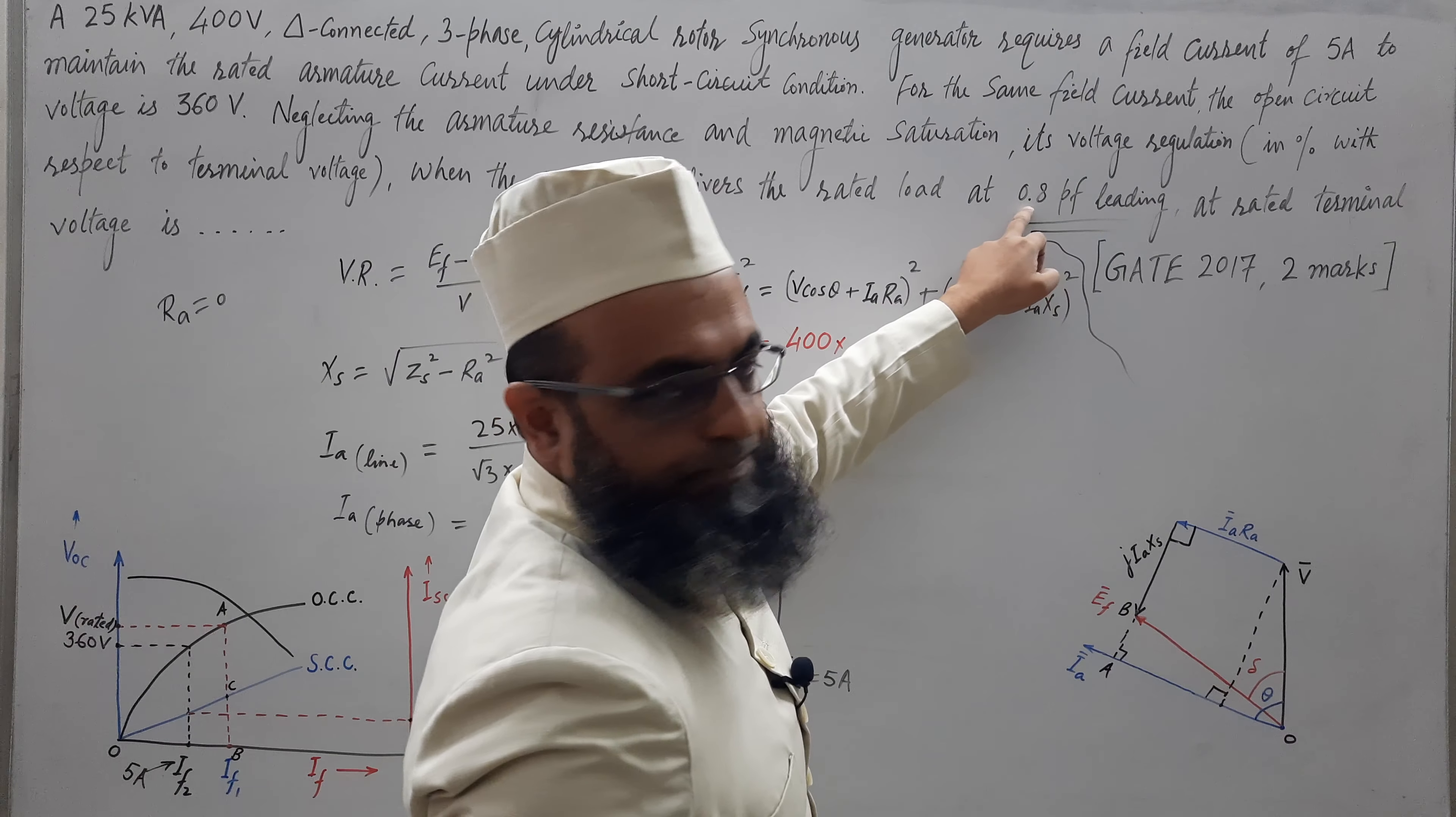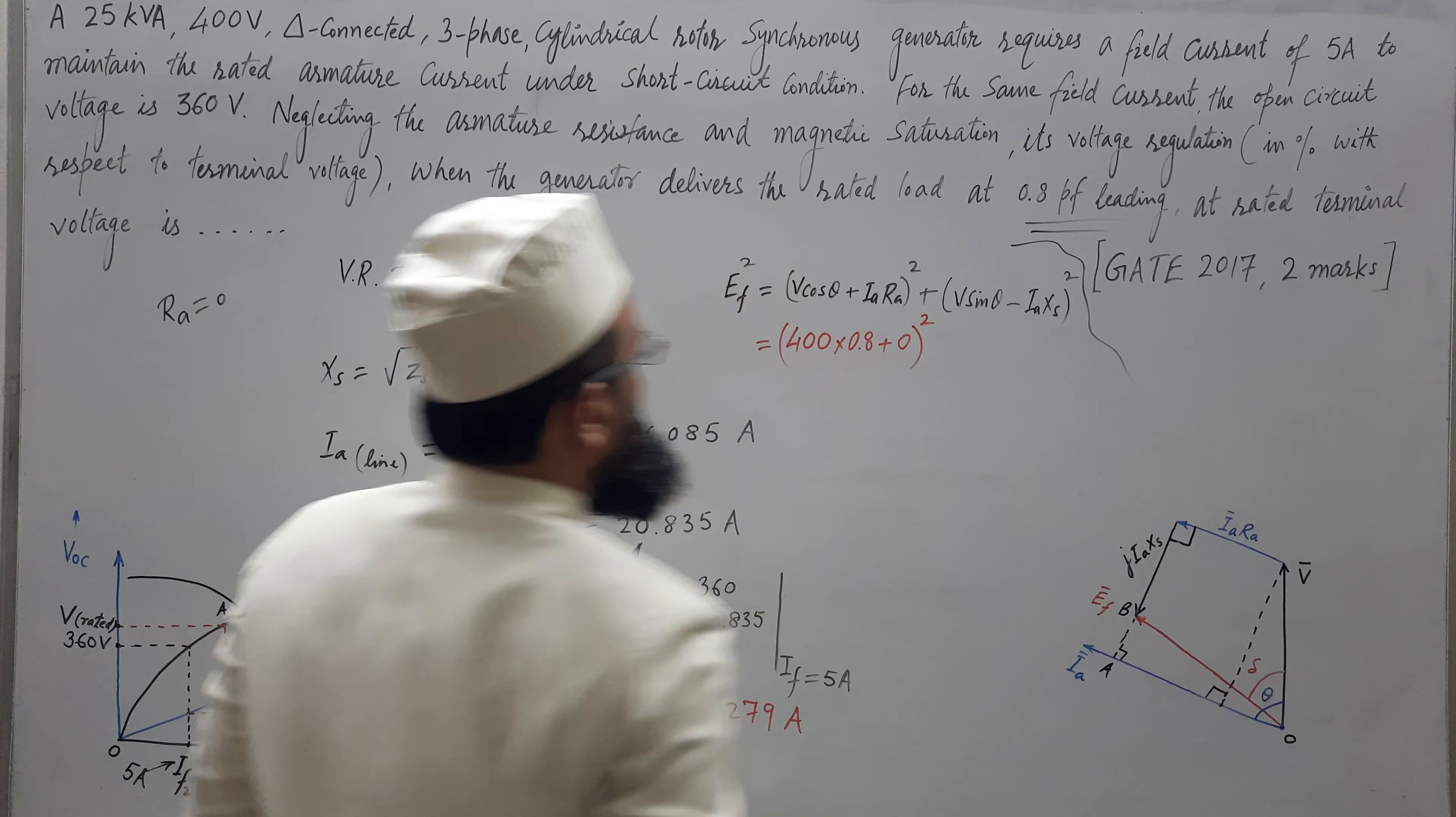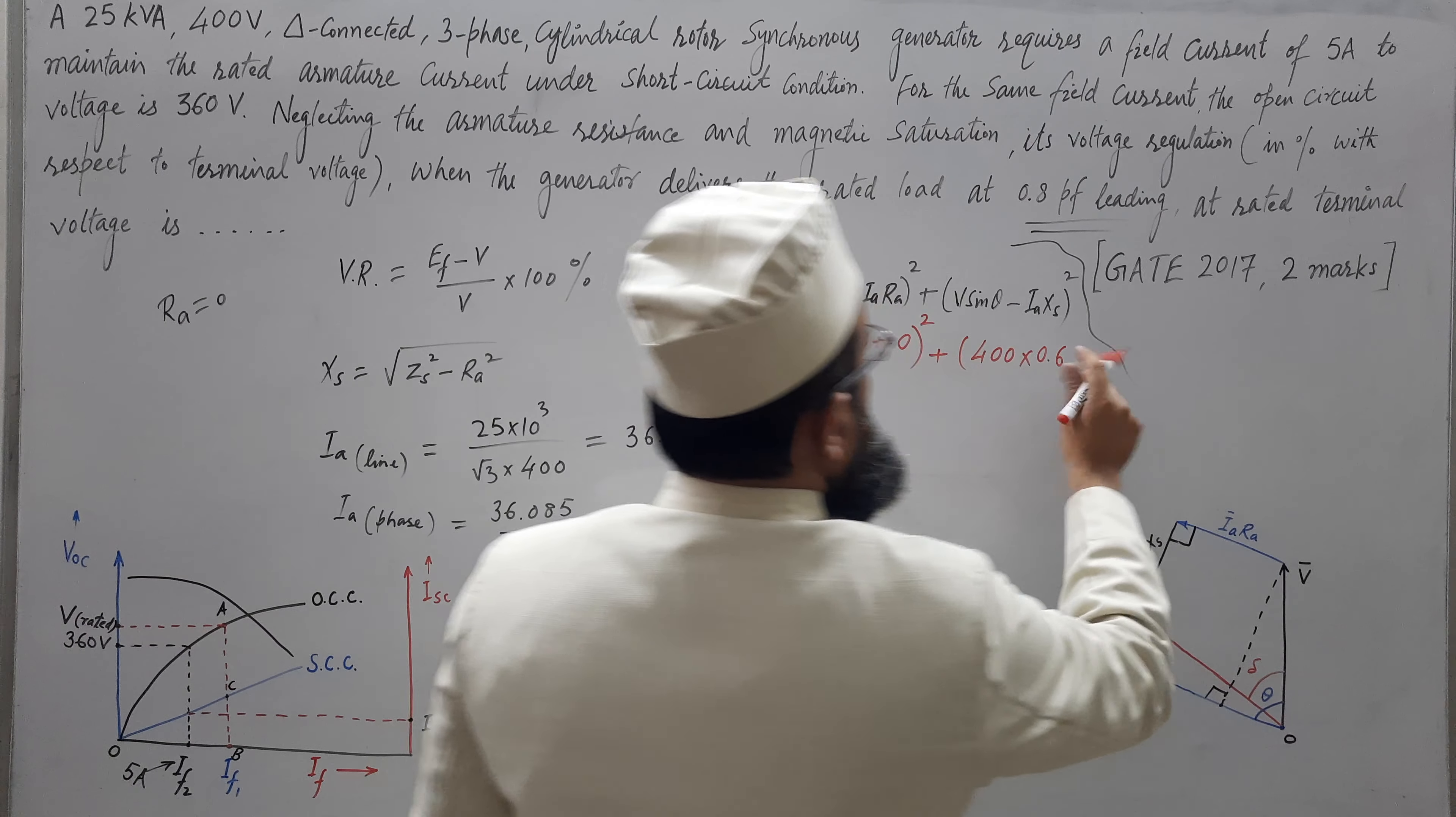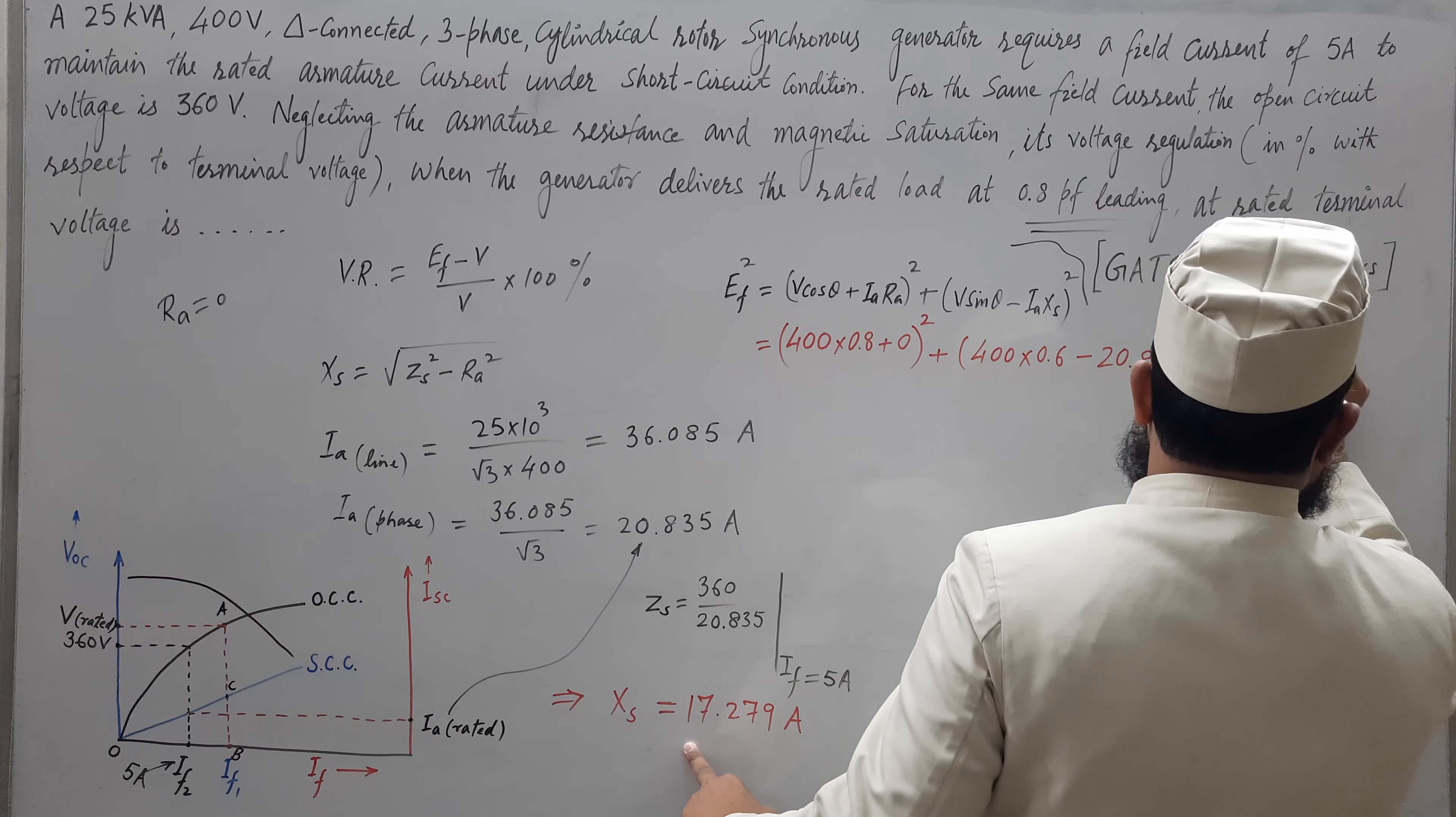Power factor is 0.8 leading, already we have taken the formula corresponding to leading power factor. So, 0.8, plus IA rated we have evaluated as 20 point, but RA has been ignored. So, no need to put the values, put here 0 directly. If not ignored, then we can get that value plus V 400 and for cos theta 0.8 we know that sin theta will be 0.6 into minus IA rated is 20.835 and XS we have evaluated 17.279 square.